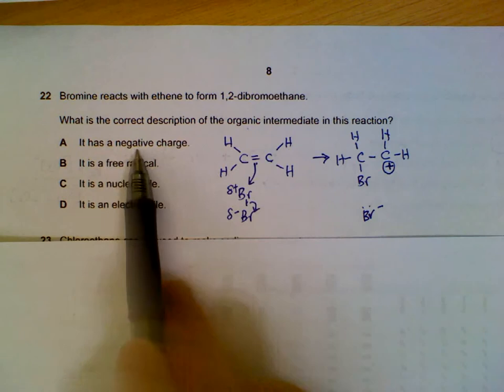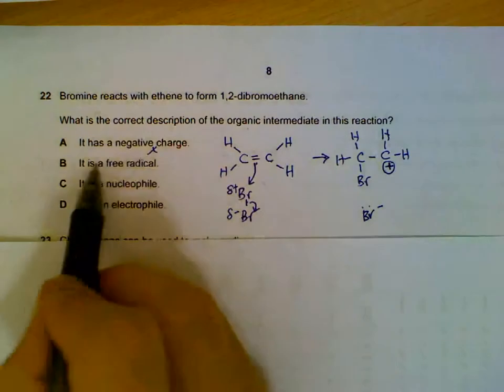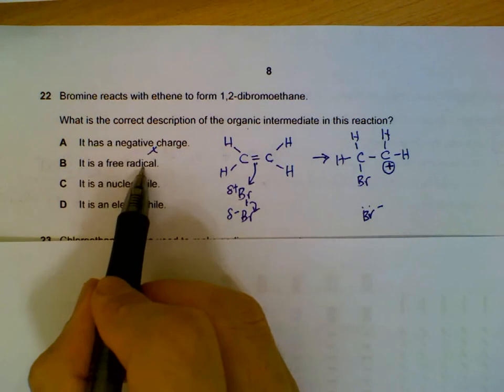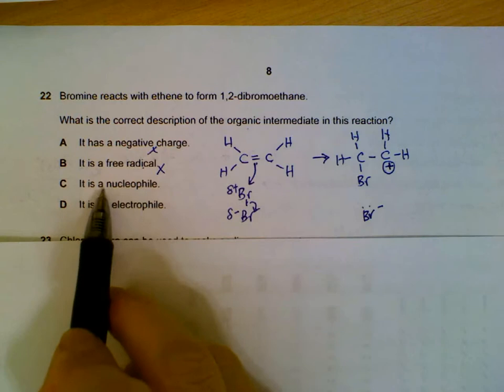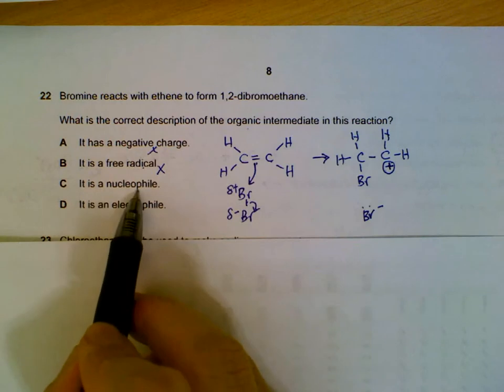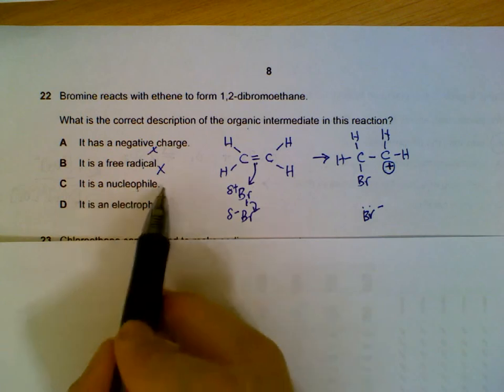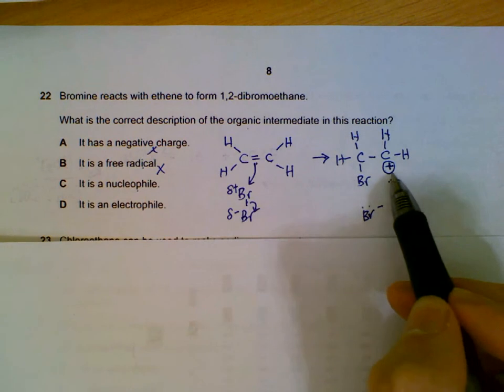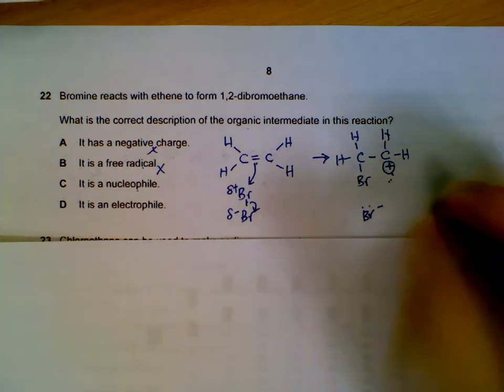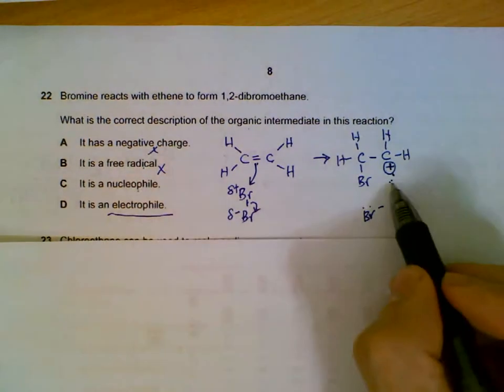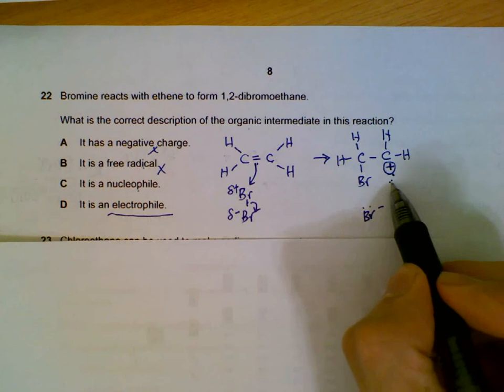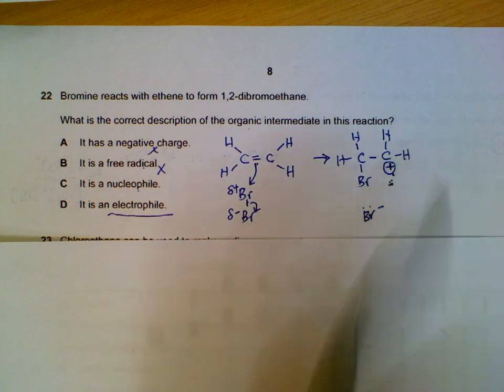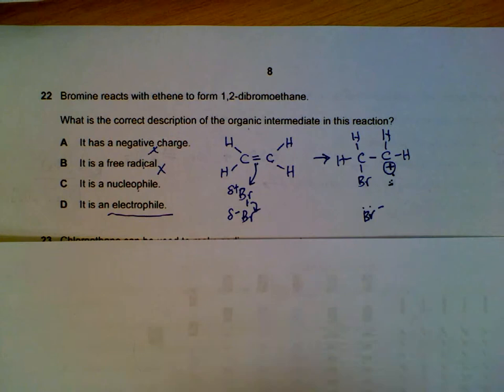So the correct description of this intermediate: it is not a negative charge, it is a positive charge. Free radical? It doesn't have unpaired electrons. Nucleophile? Nucleophiles look for regions of positive charge. If you look at here, this actually itself carries a positive charge, so it is actually interested in or being attracted to regions of negative charge. It is actually an electrophile. I repeat: it is positively charged, so it will look for regions where it's negative. It likes electrons. It is an electrophile. So the answer is D.